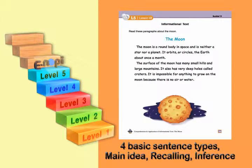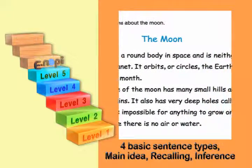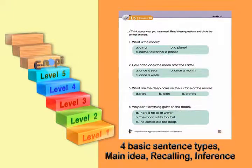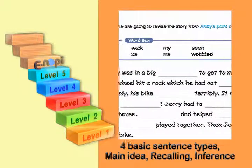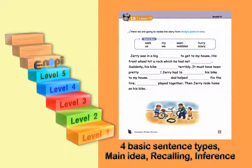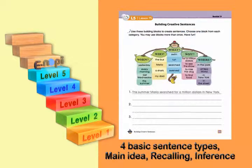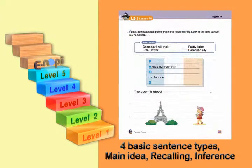Entering level 5, which is the final stage of English literacy, students learn how to utilize the basic four sentence types. They also acquire basic skills for reading comprehension, such as searching for the main idea, recalling, and inference. In order to develop creative writing skills, students start to use figurative language.